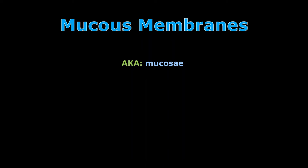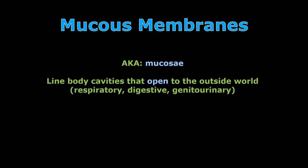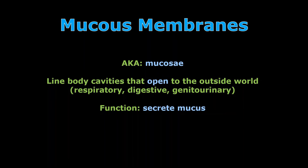Mucous membranes, also called mucosae, line body cavities that are open to the outside world. Think of the respiratory airways where you breathe in and breathe out, the digestive tract at both ends, and genitourinary openings — all open to the outside world. They're often protected by a lining of mucosae, both to secrete mucus for lubrication and to act as a sticky trap if any type of foreign particle tries to enter the body through these openings.